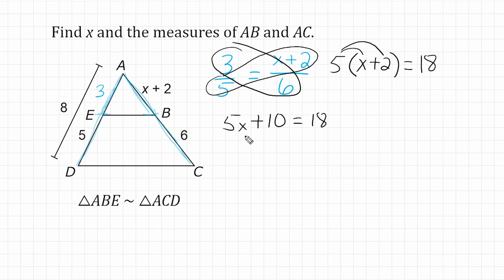Now, all we have to do is solve for x. So we're going to take this plus 10 and move it to the other side as minus 10, and that's going to give us 8. Then we're going to divide both sides by 5. We end up getting a value that is an improper fraction, which is okay. The value of x is equal to 8 fifths.